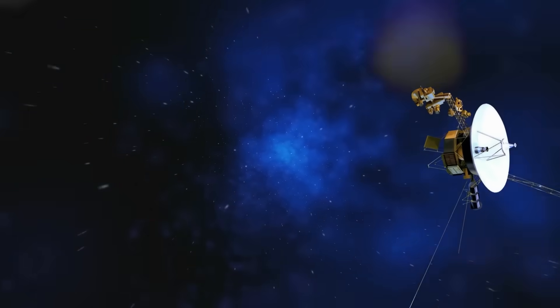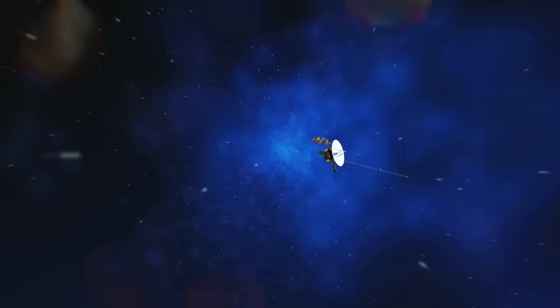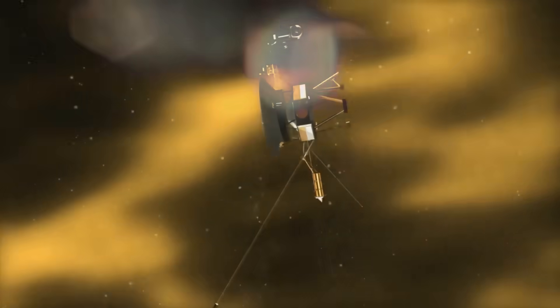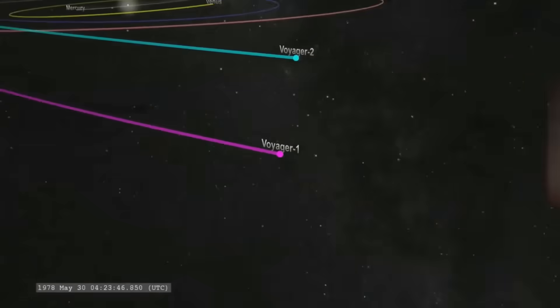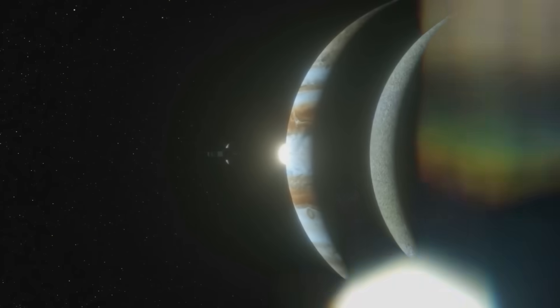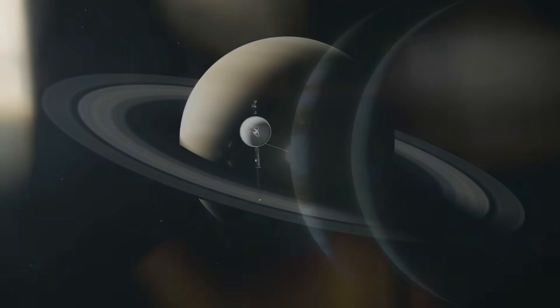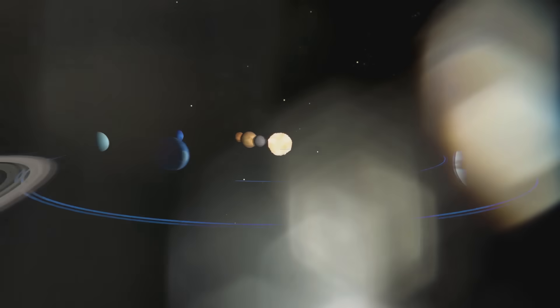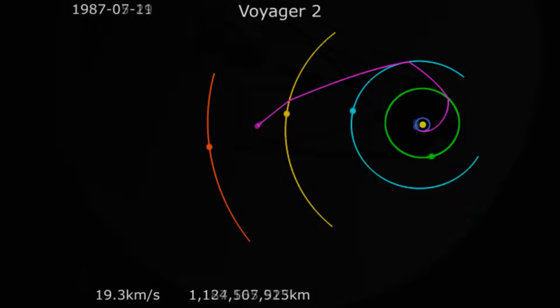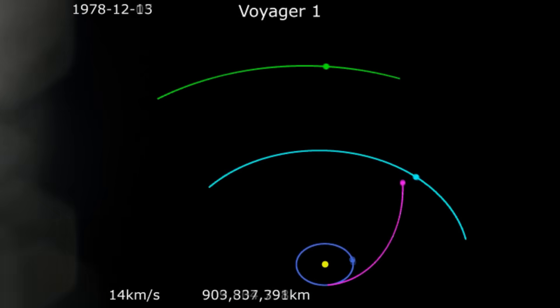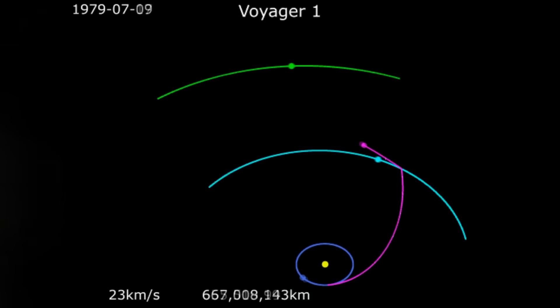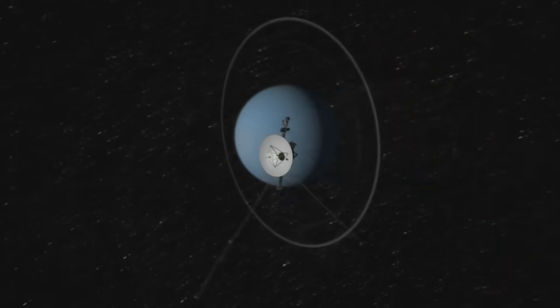What had once been assumed to be a hazy transition between solar and interstellar space was, in fact, a hard line, a border, and Voyager 2 had just crossed it. For decades, textbooks described the edge of the solar system, the heliosphere, as a fuzzy zone where the solar wind gradually weakens and merges with the interstellar medium. But Voyager 2 proved otherwise.